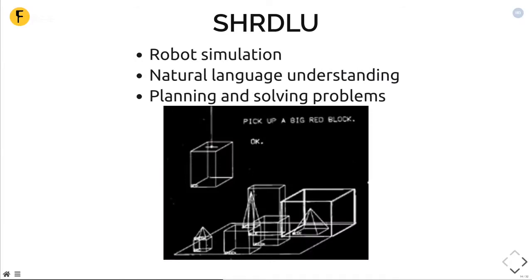Another important MacLisp application is called Shrdlu. It's a kind of robot simulation where you can see a robot arm picking up blocks. You can tell it things in natural language, ask it questions, and tell it to solve puzzles. For example, if you tell it to put a block on another block that's already occupied by a pyramid, it will figure out for itself that it needs to first remove that pyramid. So this is an important early application of AI.